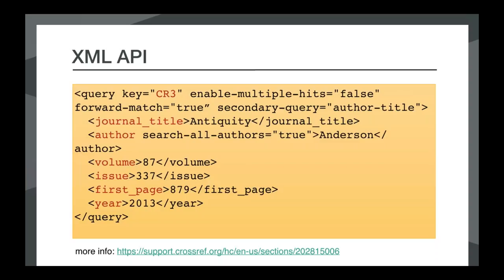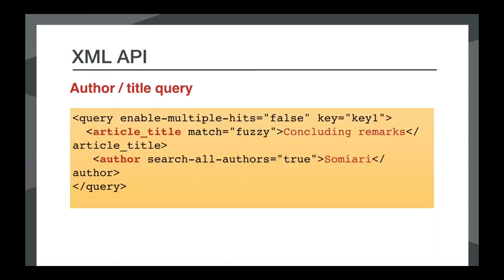You can also refine your query by requesting fuzzy matching on an author name or journal title. Or you can ask our query engine to do an author and article title query if a full metadata query doesn't find a match, and you can also submit a separate author and article title query. Author and article title queries aren't as accurate as full metadata queries, as it's not uncommon for an article to be published in multiple journals or as book chapters, but it's an option especially for references that work with that kind of query.